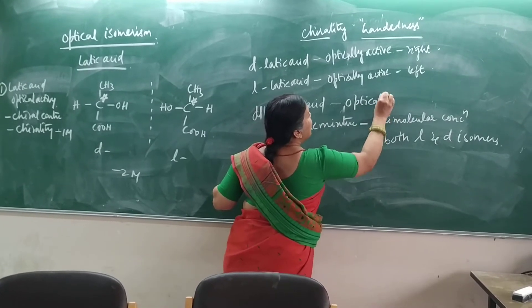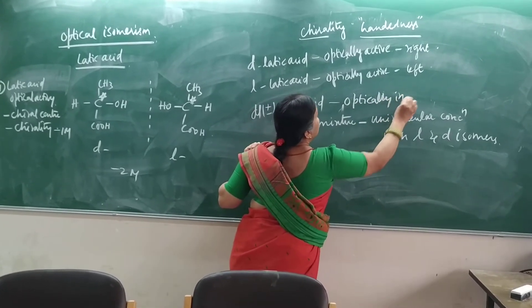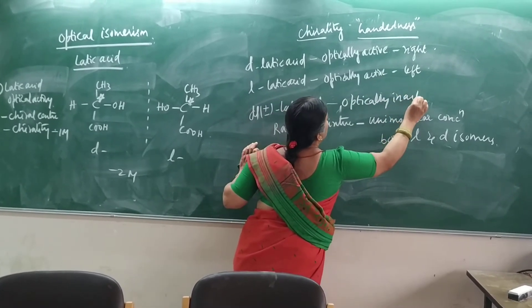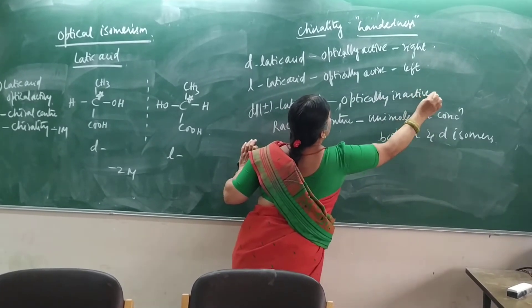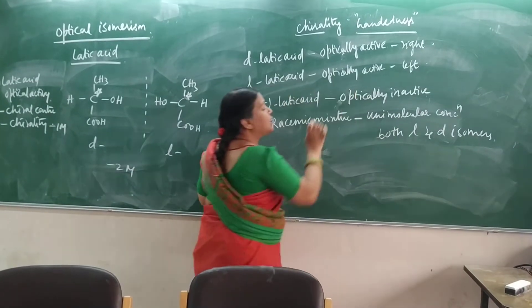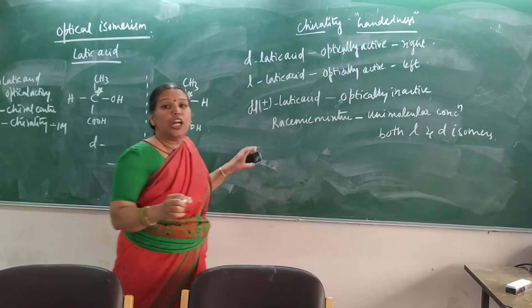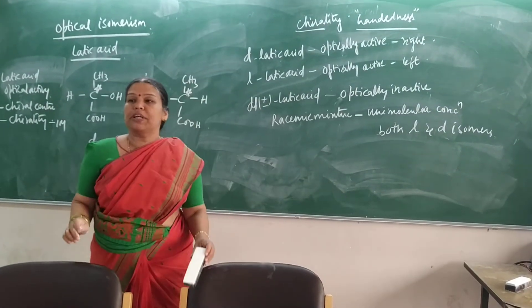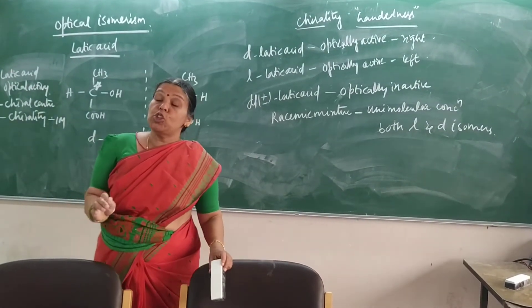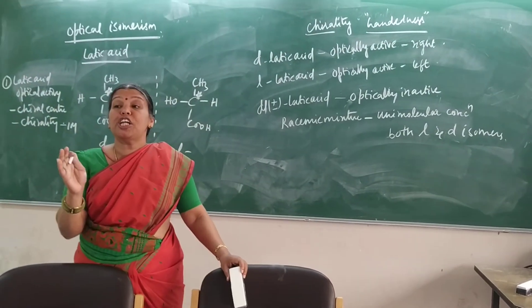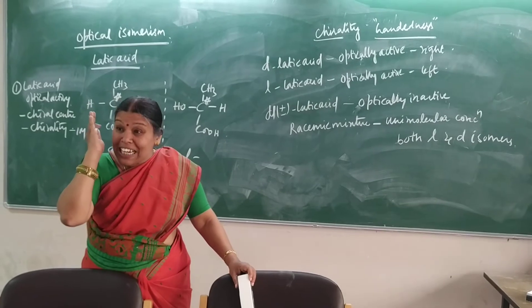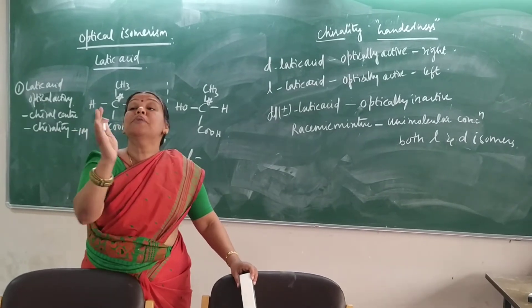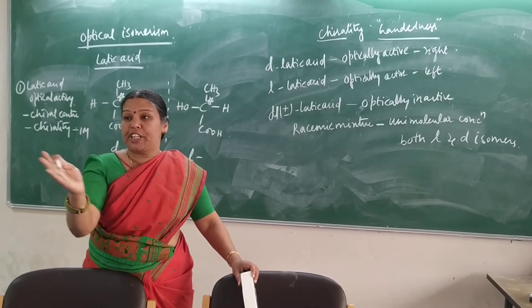Why is it optically inactive? Because one isomer rotates the plane polarized light, and the other rotates it exactly the same angle but in the opposite direction.